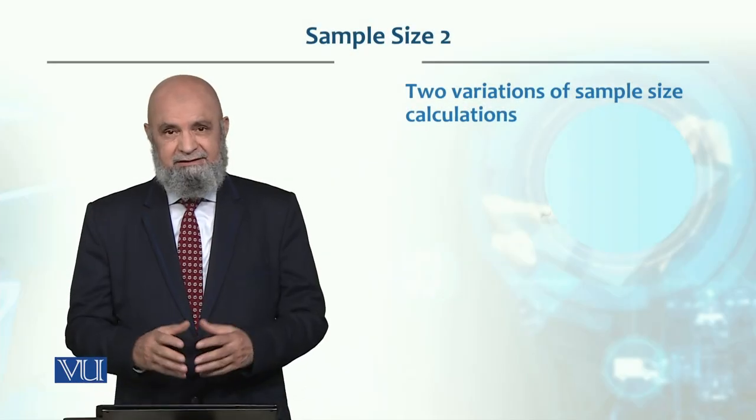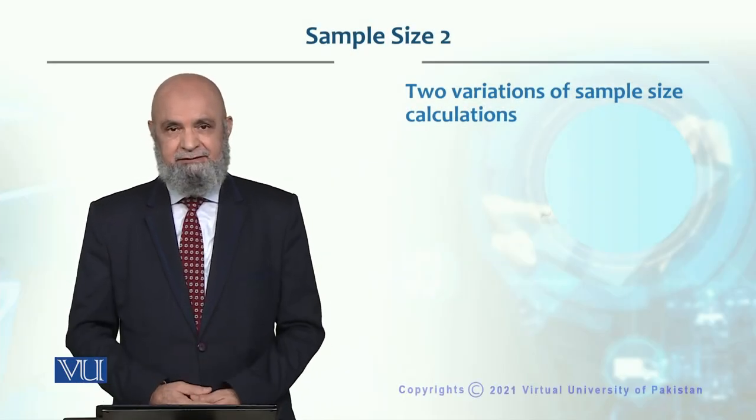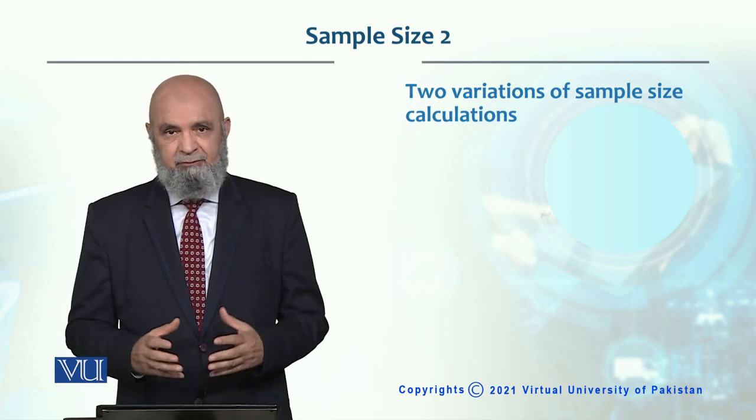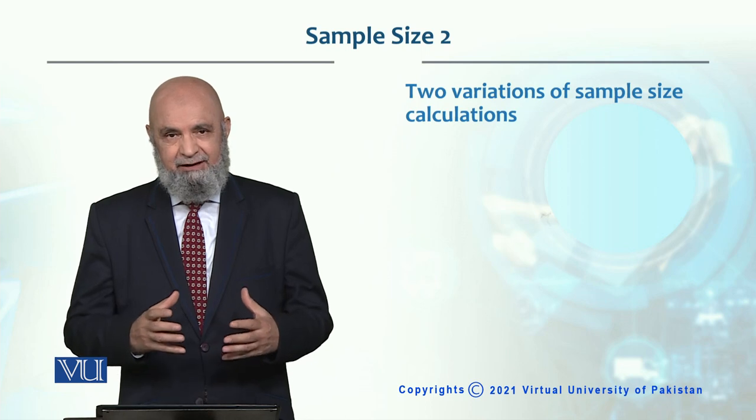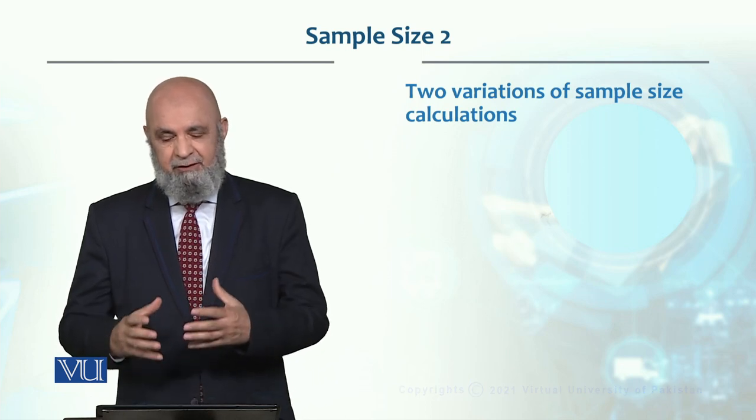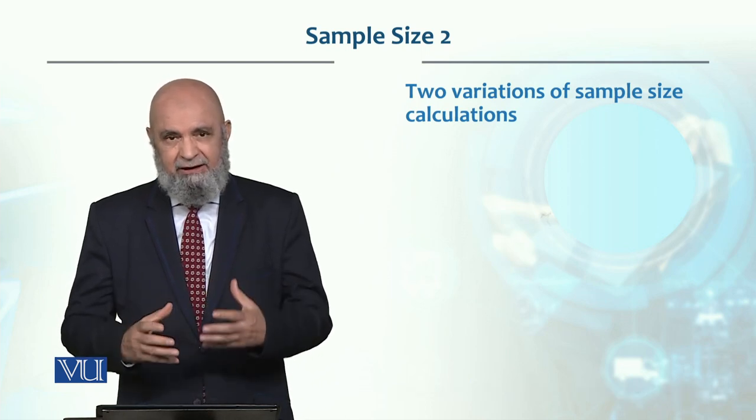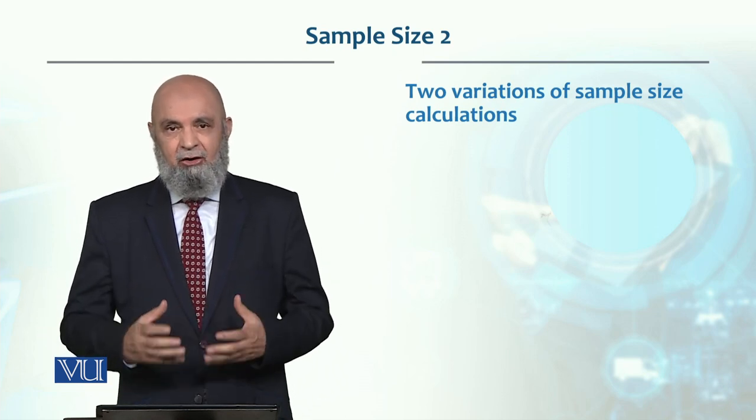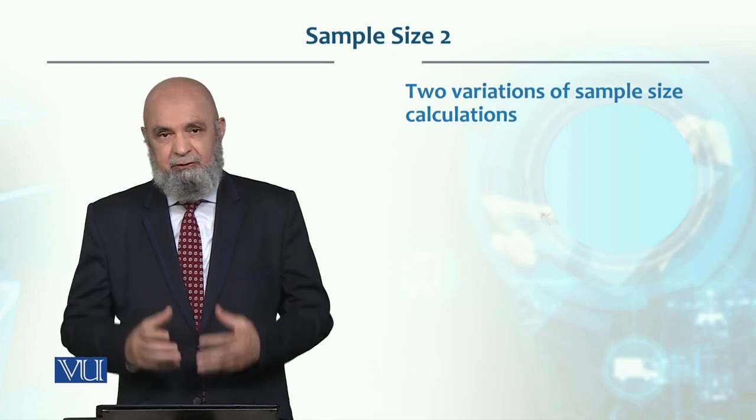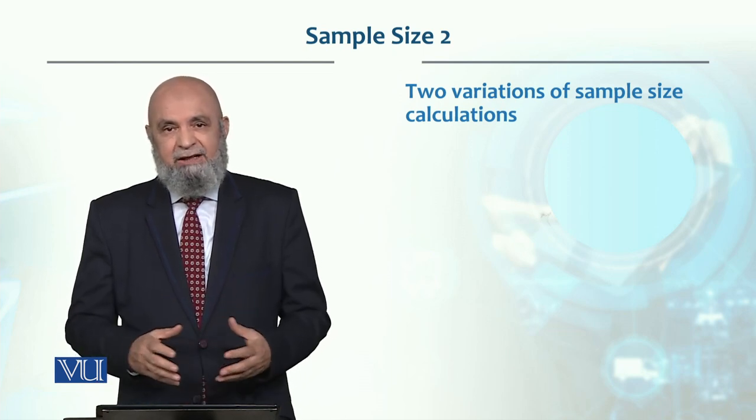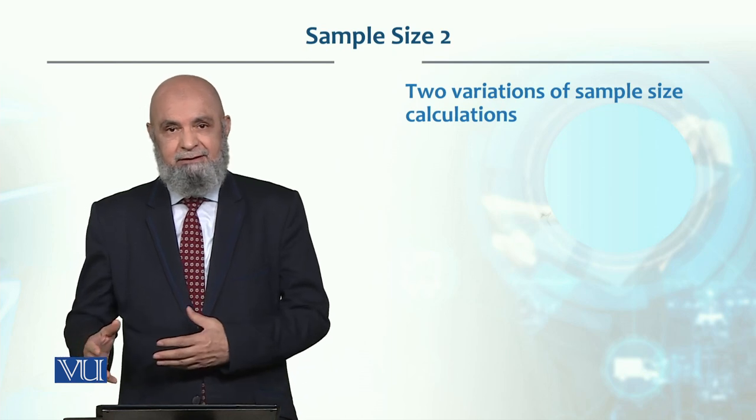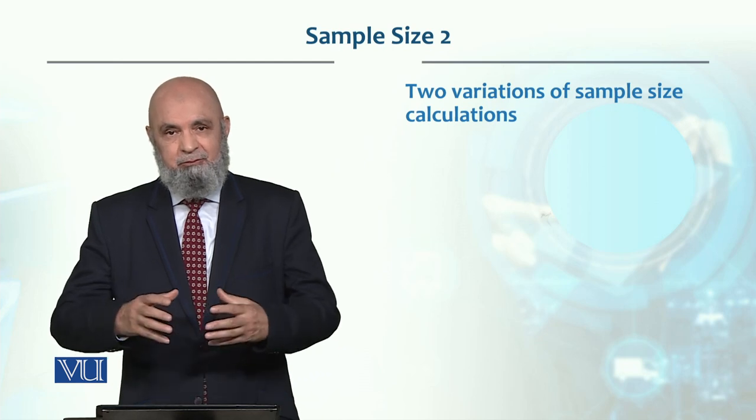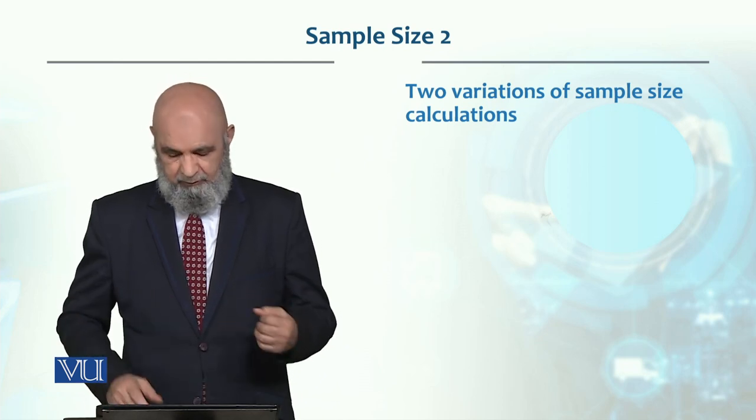In this sample size calculation, there are two variations. For example, if the accuracy is not given in percentage terms and the accuracy is given in absolute value, for example, we say plus minus one minute instead of three percent or two percent. We say plus minus within one minute.